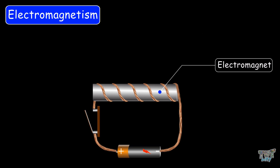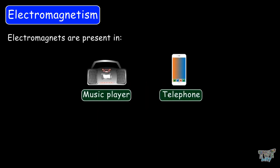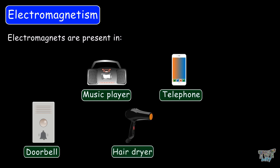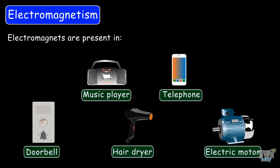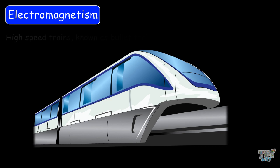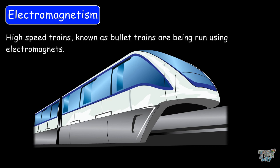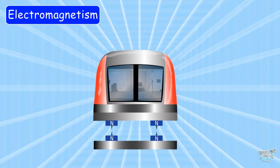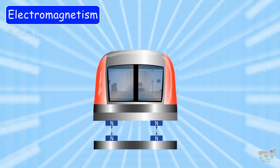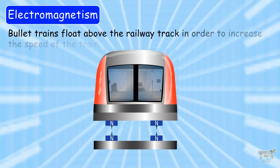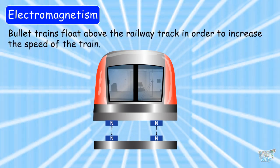Friends, you are surrounded by numerous electromagnets in your home. Electromagnets are present in music players, telephones, doorbells, hair dryers, and electric motors. Moreover, nowadays high-speed trains known as bullet trains are being run using electromagnets. Bullet trains do not run on the track — in fact, bullet trains float above the railway track in order to increase their speed.